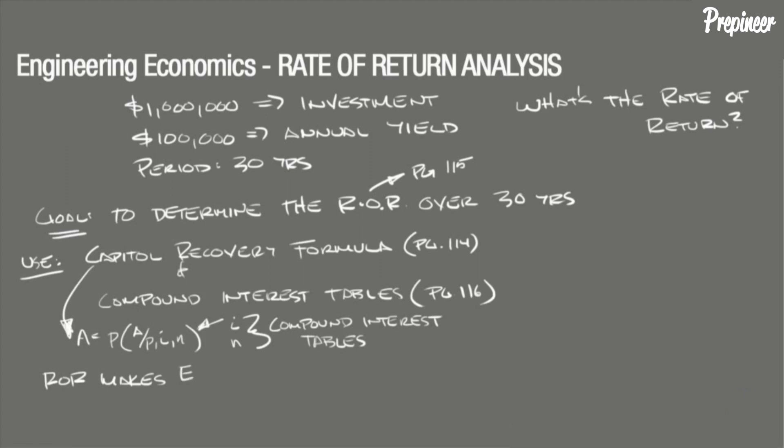Equivalent Uniform Annual Cost equals Equivalent Uniform Annual Benefits. Now the Equivalent Uniform Annual Cost, or EUAC, of this problem is P times A over P IN, and the EUAB, which is the benefit for this problem, is $100,000.